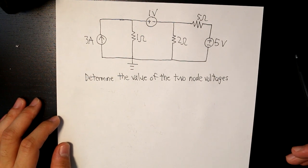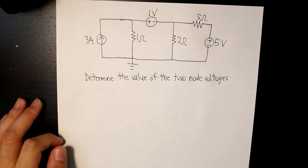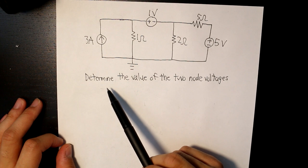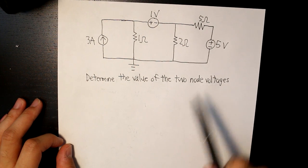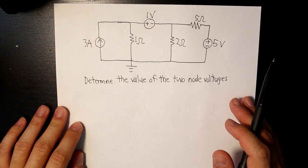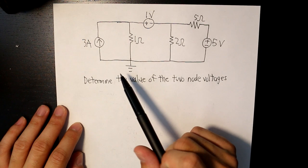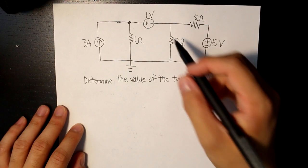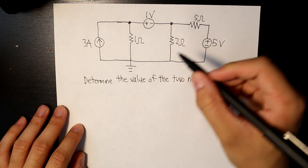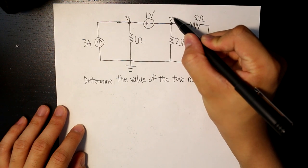So in this question, we're already given all of our values for each component. And the question is to determine the value of the two node voltages. The two node voltages are unknown, but we can identify them straight away. So the first node voltage would be this one right here, and the second one would be this one right here. And we'll label them as follows: V1 and V2.